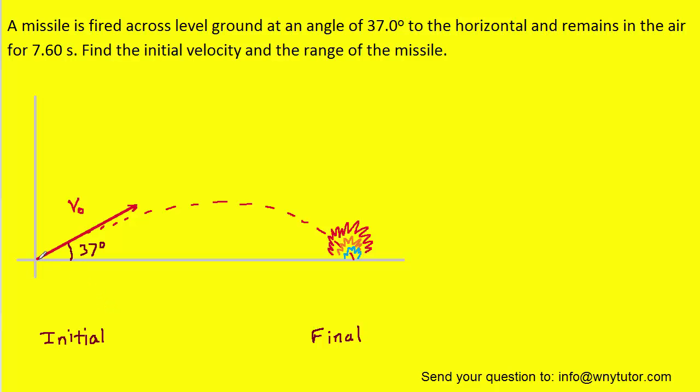So here we have placed the missile at the origin, and we've shown the initial velocity with this red vector, and it's fired at an angle of 37 degrees to the horizontal. Of course, it travels in a parabola and then ends up in the final scenario here, and we've drawn a little explosion there for good measure.